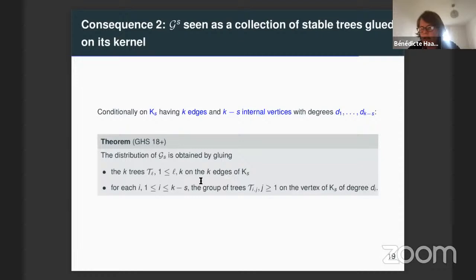In parallel, we will glue on each vertex of K_S — we have K minus S vertices — a group of stable trees T_{a,j}. There we have an infinite number of stable trees, rescaled by using the product of M_{i+K} and delta. We have an explicit distribution of the graph G_S as a collection of rescaled stable trees glued on the kernel K_S, and we have explicitly the distribution of the kernel. So we have the distribution of the whole graph.